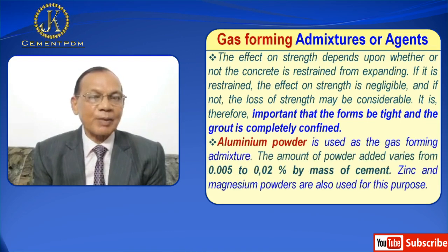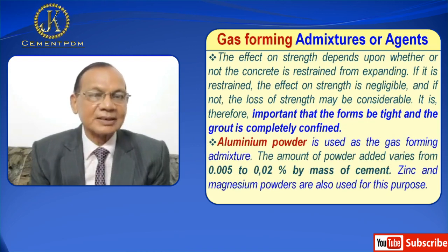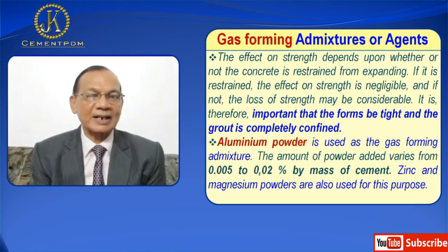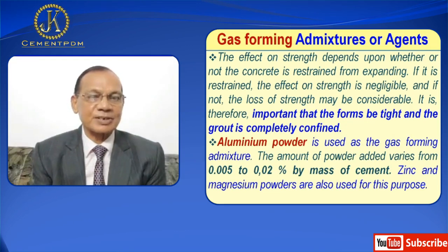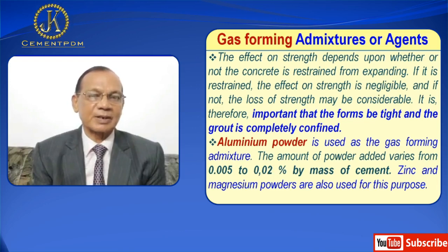Aluminium powder is used as the gas forming admixture. The amount of powder added varies from 0.005 to 0.02% by mass of cement. Zinc and magnesium powders are also used for this purpose.